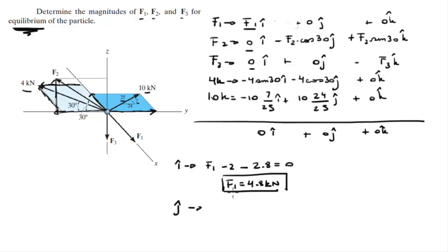Now the j components: 0 - F2 cos(30°) - 4 cos(30°) + 10(24/25) = 0. So -0.866 F2 - 3.464 + 9.6 = 0. When you solve for F2, you get F2 = 7.09 kN.